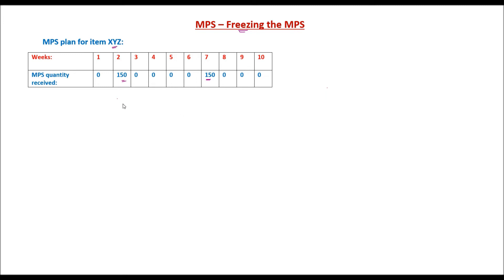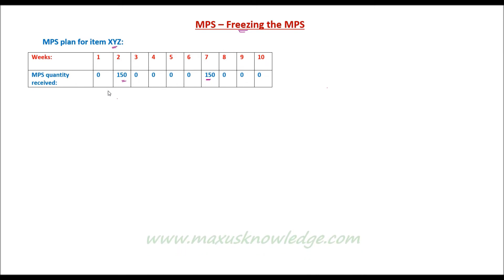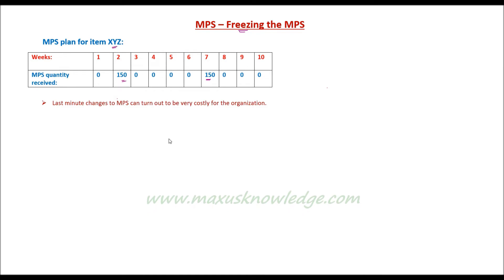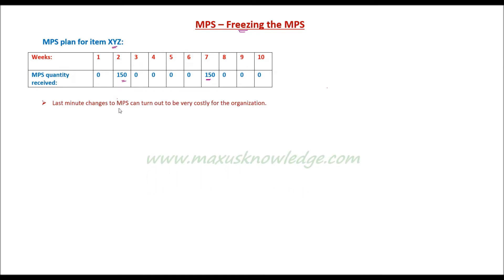Now let's say someone tells you in week 1 that we don't need to manufacture 150 quantities in week 2 — we want to manufacture a different quantity. In that case, these last-minute changes will turn out to be very costly for the organization.